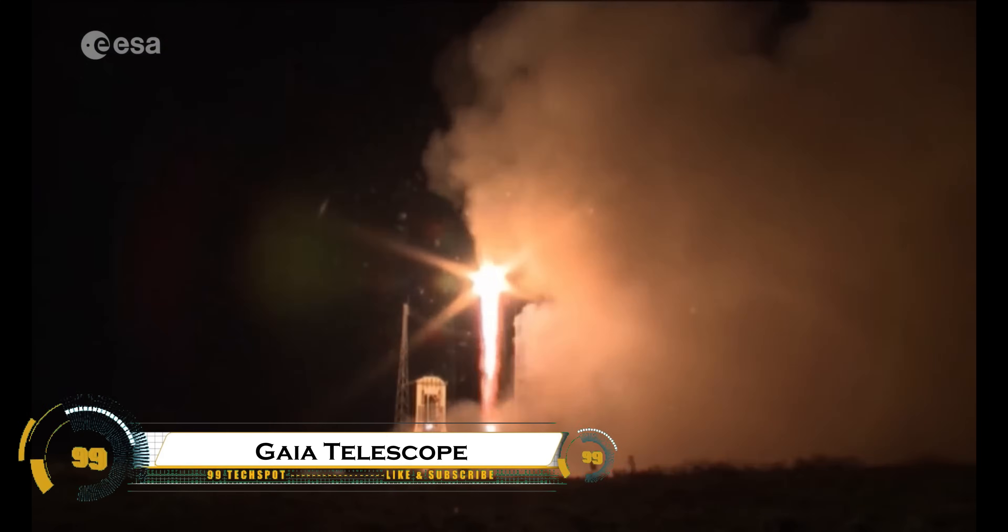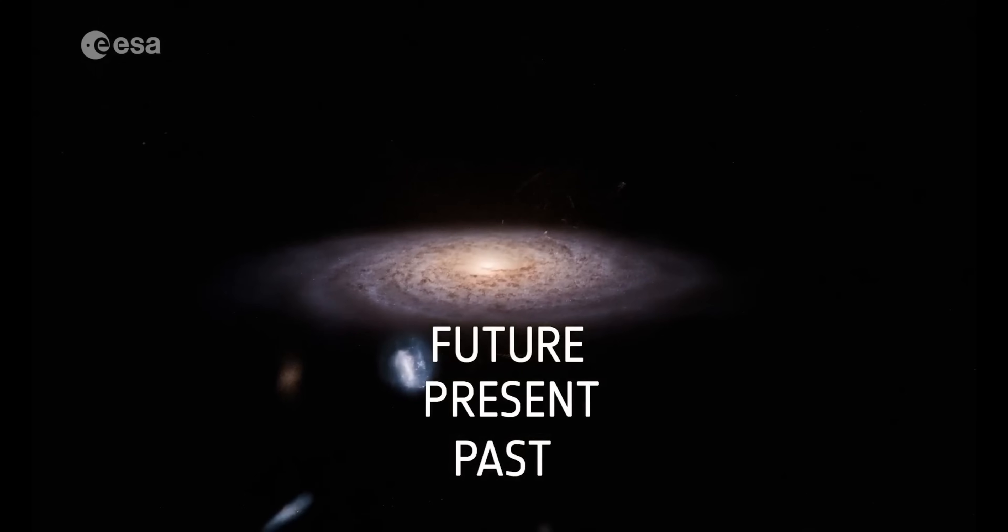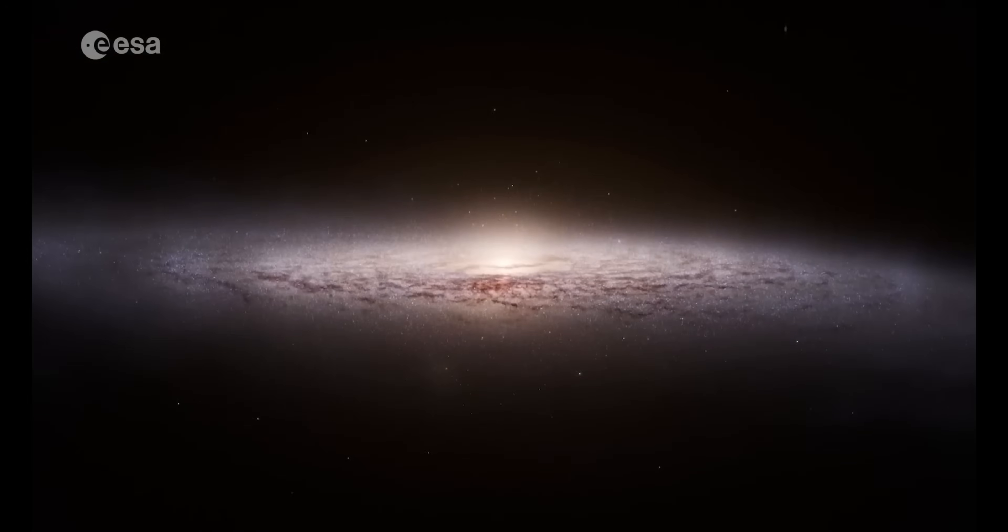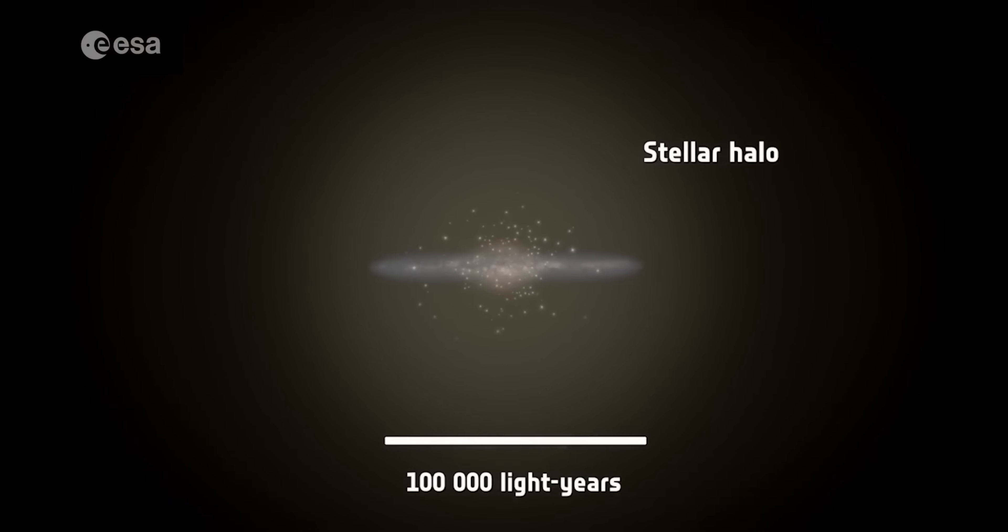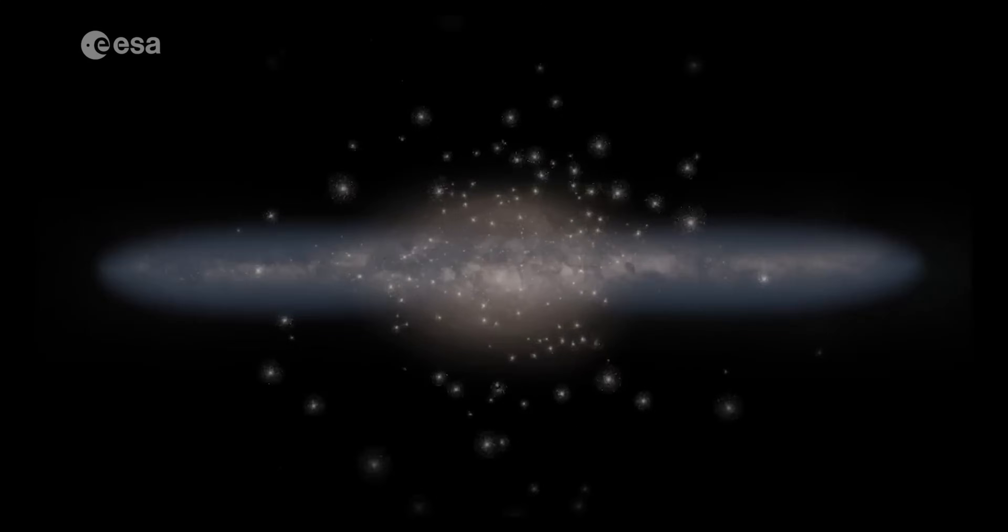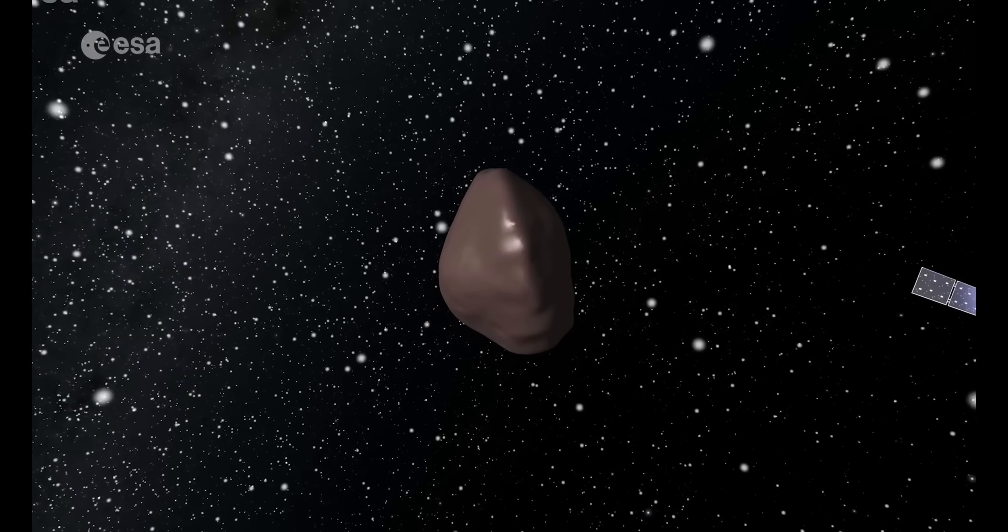Launched in 2013, the ESA's Gaia space telescope is an incredible mission designed to create the most detailed 3D map of the Milky Way galaxy. By measuring the positions, distances, and motions of over 1.5 billion stars, Gaia provides groundbreaking data that helps astronomers understand stellar evolution, galactic formation, and the structure of our universe.